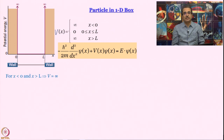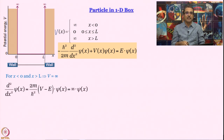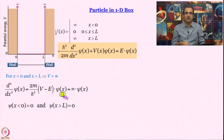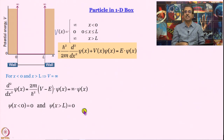Outside the box, for x less than 0 and x greater than L, V equals infinity. If V equals infinity, we get the term (2m/ℏ²)(V − E)·ψ(x) equaling infinity times ψ(x). This can only be correct if ψ(x) = 0. So right away we learn that for x less than 0 and x greater than L, the wave function is equal to zero.